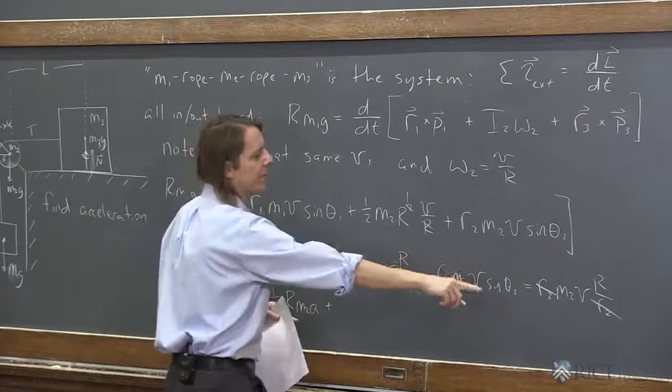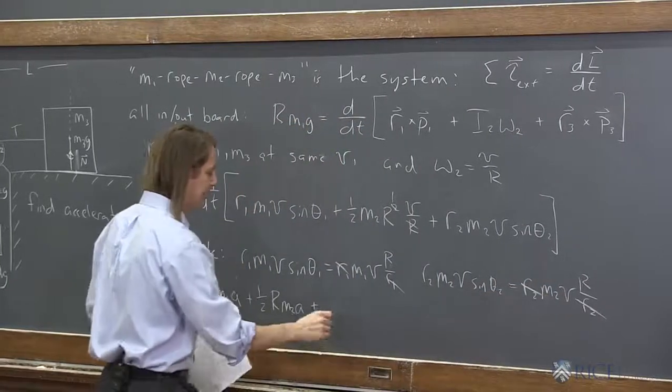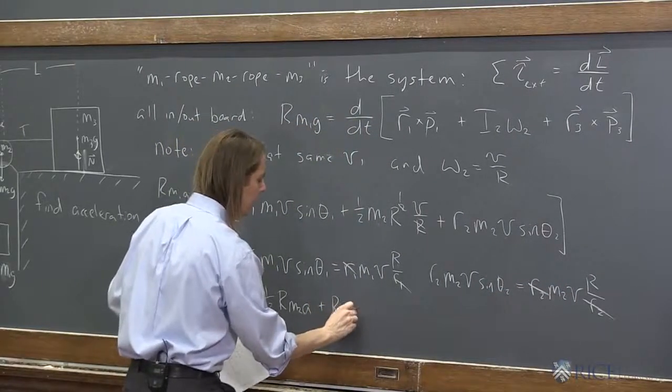What does this become? R M2 V. V becomes A when you take a time derivative. R M2 A.